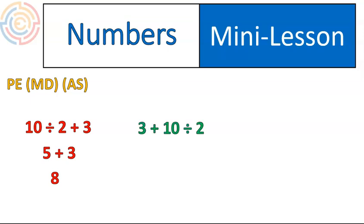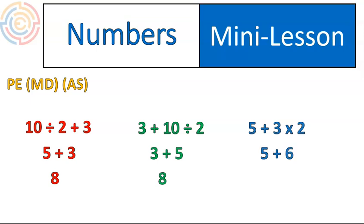I want to show you another question that's very similar: 3 plus 10 divided by 2. With this one, I will do the division first. 10 divided by 2 is 5. And then I will do the addition — 3 plus 5 gives me 8. Notice I got the same answer, because in both cases I did that division, 10 divided by 2, first, and then added on the 3. That is correct with the order of operations. Now look at this final question — pause the recording and try that out. Did you add 5 plus 3 or did you do 3 times 2? The 5 plus 3 is addition and the 3 times 2 is multiplication — we do multiplication before addition. So we should have done 3 times 2, which gives us 6, and then we add 5 plus 6 to get our final answer.